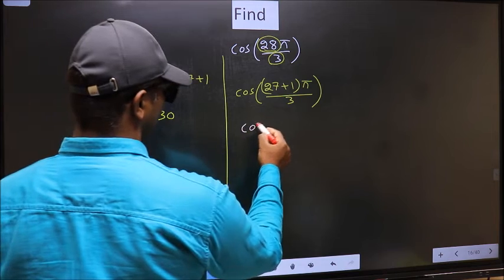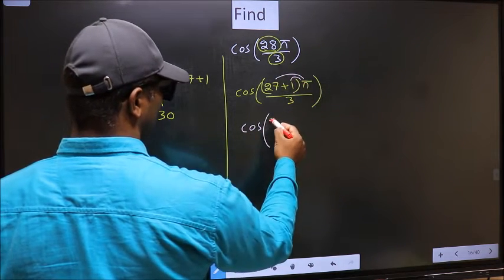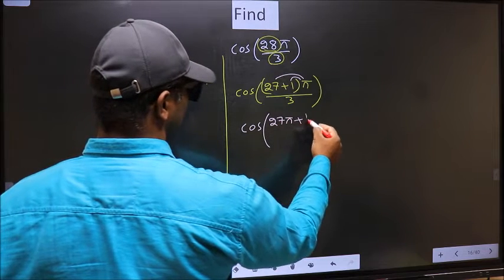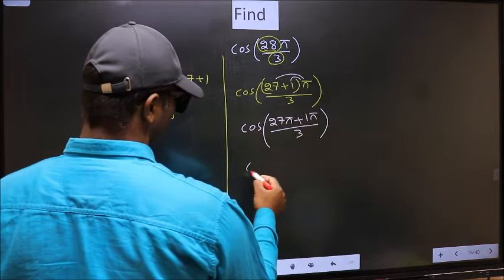Cos. Now you should open the brackets. You get (27π + π)/3.